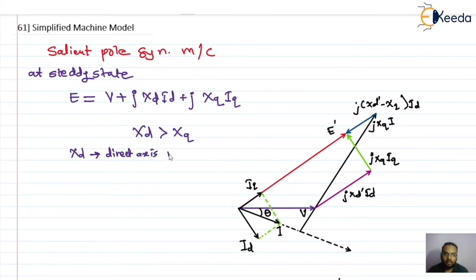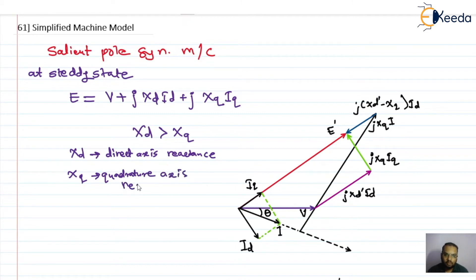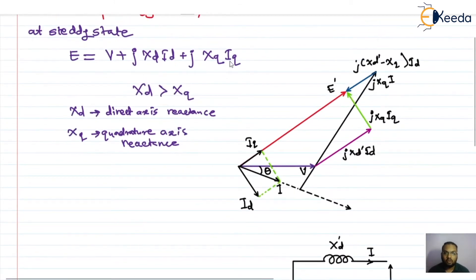Xd is the direct axis reactance and Xq is the quadrature axis reactance. Accordingly, Id is the direct axis current and Iq is the quadrature axis current.